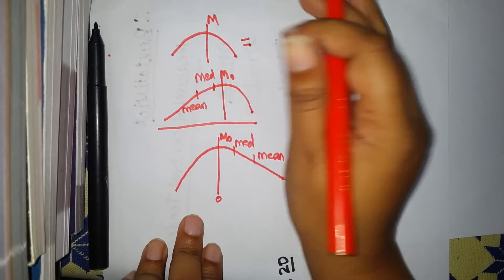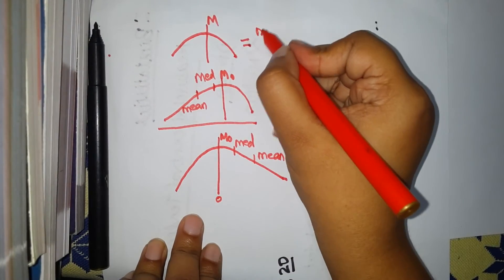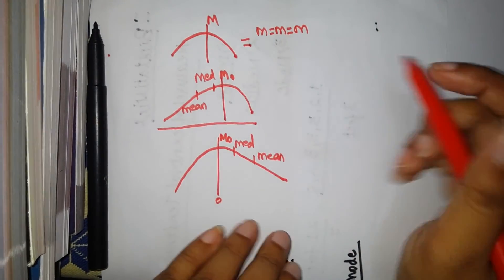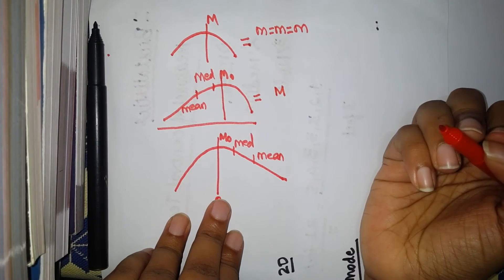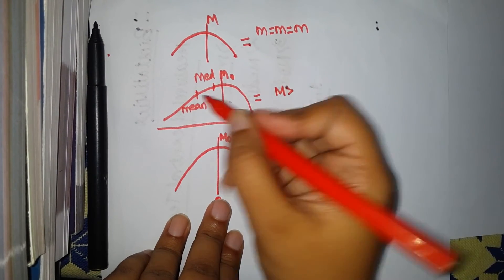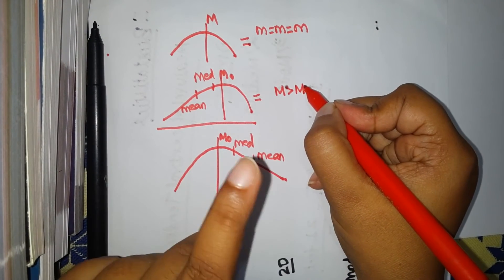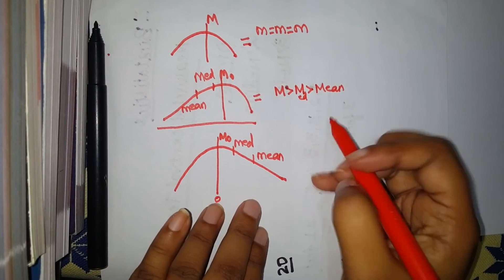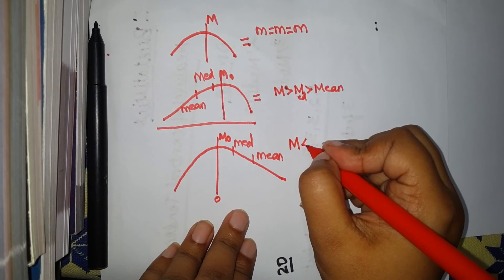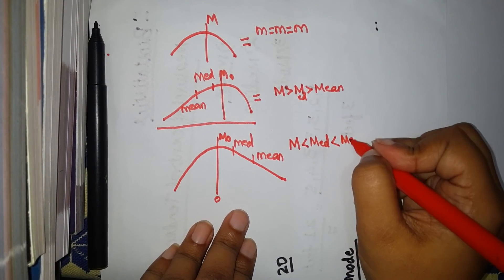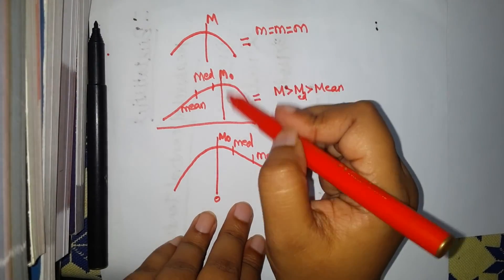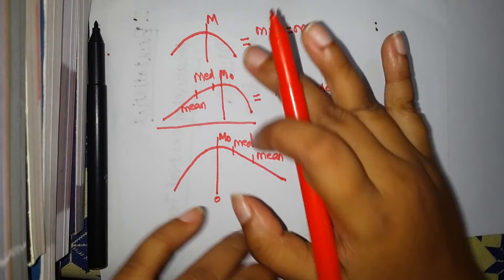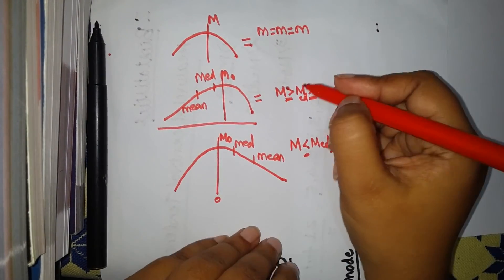In a normal distribution with no skewing, mean equals median equals mode. Whenever you need to write the relationship, think of mode first, then median, then mean. In negative skewing, mode remains the same, median becomes slightly less, and mean becomes very less due to the negative value. In positive skewing, mode stays in the center, median increases slightly, and mean rises the most. Just remember: mode is never affected, mean is affected maximum, and median stays in the center.